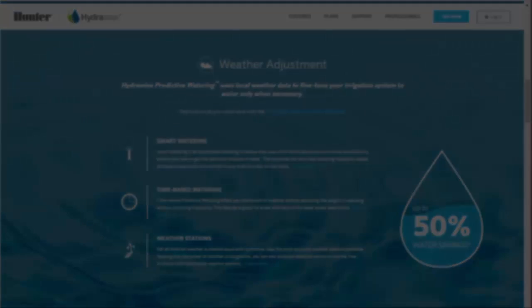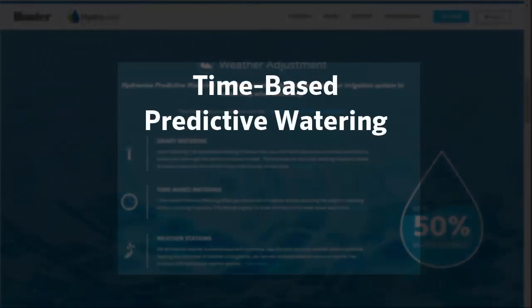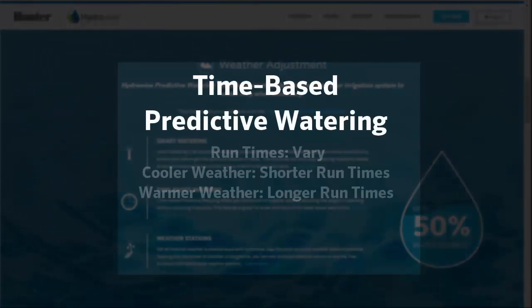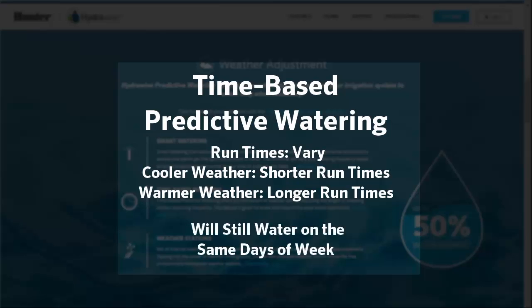To summarize, when using the predictive watering adjustments with time-based schedules, the runtimes will change: when it's cooler the runtime will be less, and when it's warmer the runtime will be more, but it will still water on the desired days.